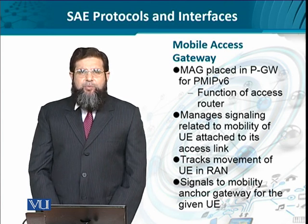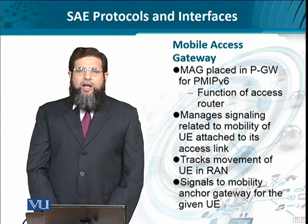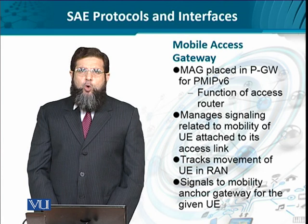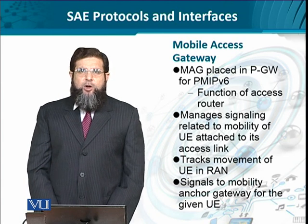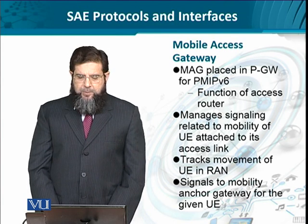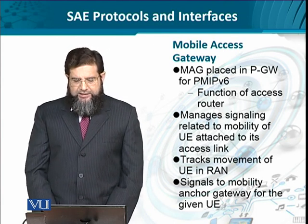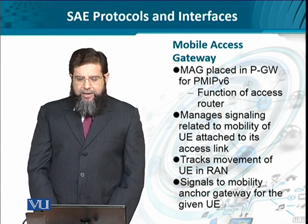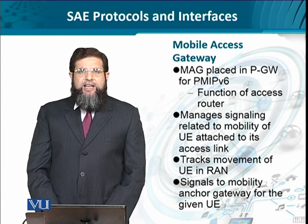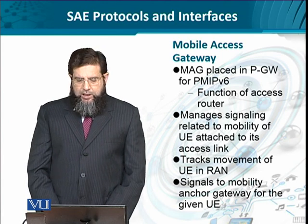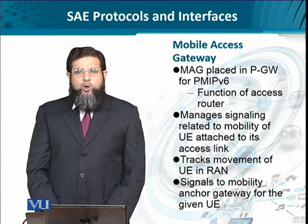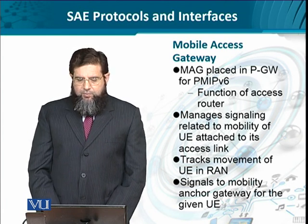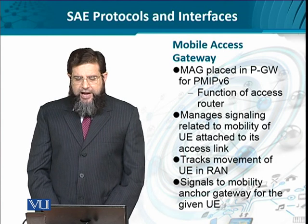The MAG acts like an access router, and access routers are connected to core routers — they serve as a bridge between the user equipment or customer premises side and the core network. As a mobile access gateway, the packet gateway manages signaling related to mobility for user equipment that is directly connected to the access links. The access link is a radio element, which is why the protocol understanding of the radio must be incorporated at the packet gateway.